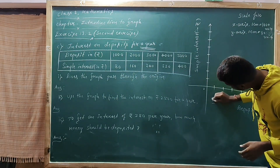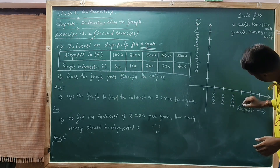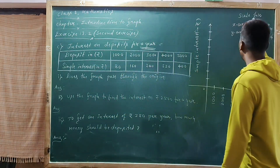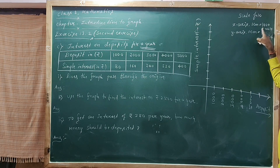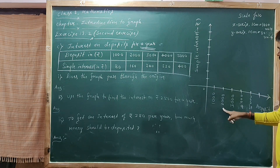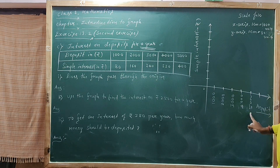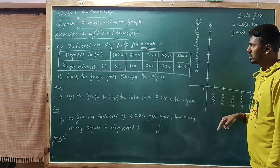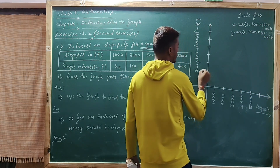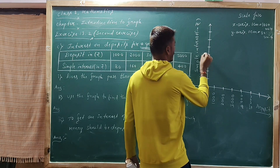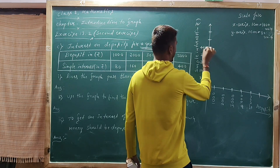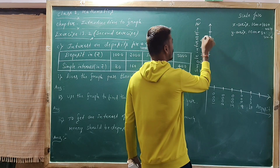Represent the deposits: 1000, 2000, 3000, 4000, 5000. The corresponding simple interest values are: for 0 deposit the interest is 0; for 1000 it is 80; for 2000 it is 160; for 3000 it is 240; for 4000 it is 320; for 5000 it is 400.